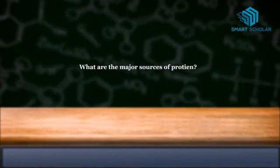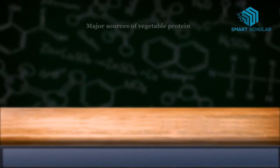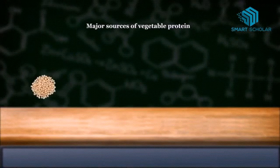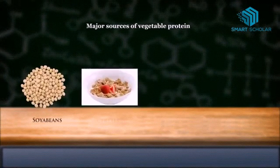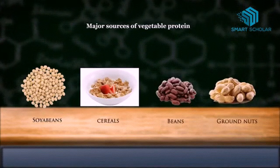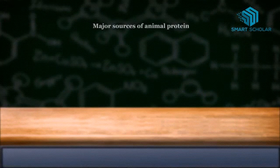What are the major sources of protein? We have two types of sources: vegetable sources and animal sources. Vegetable sources include soybeans, cereals, beans, brown rice, nuts, etc. Animal sources include eggs, fish, meat, milk, etc.